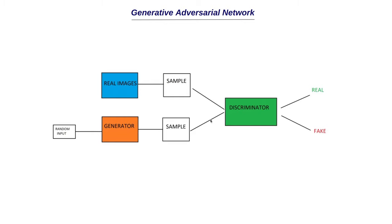The discriminator looks at both the real image and the image generated by the generator. It doesn't know which image is coming from the generator and which is from the real image dataset. It should say whether each image is real or fake. Ideally it says real images are real and generated images are fake. The key factor in training a GAN is training both the generator and the discriminator simultaneously. The generator tries to generate images that trick the discriminator, and the generator should reach a point where the discriminator cannot distinguish between real and fake images.